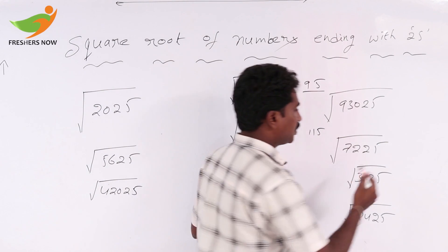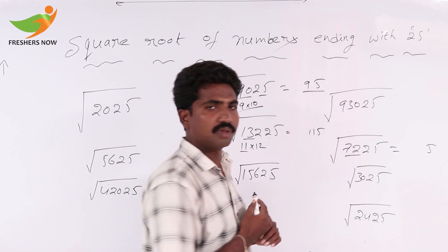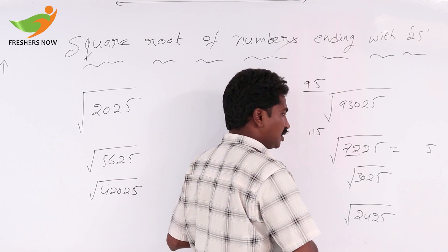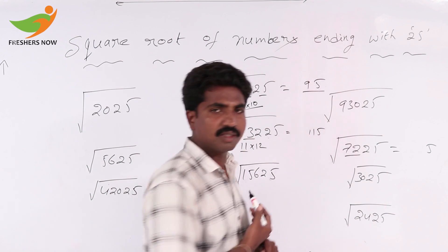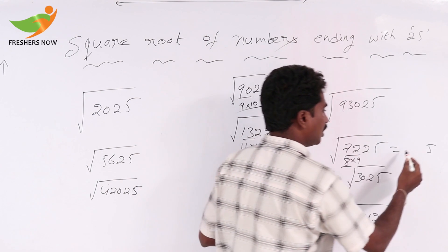If you take 7225, 25 is 5. 72. Can we write 72 into the multiple of two consecutive numbers? 8 nines, 9 x 8 is 72. So it's a small number.